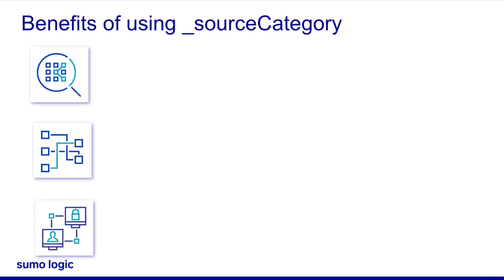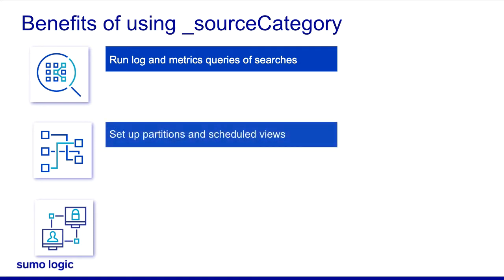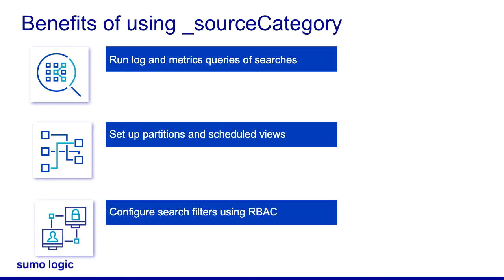Setting source category values, especially for a small set of sources, may seem trivial at first. A well-designed convention for defining source categories is important. You will leverage the source category metadata field along with other metadata when you run log and metric queries or searches, set up partitions and scheduled views — which are indexes that can optimize the search experience — and configure search filters that govern what data users can view using Sumo Logic's role-based access control, or RBAC, functionality.